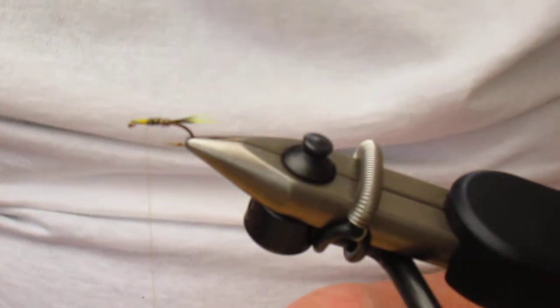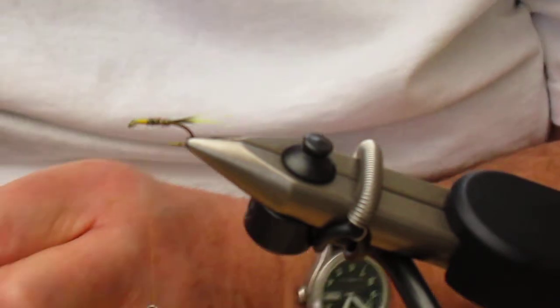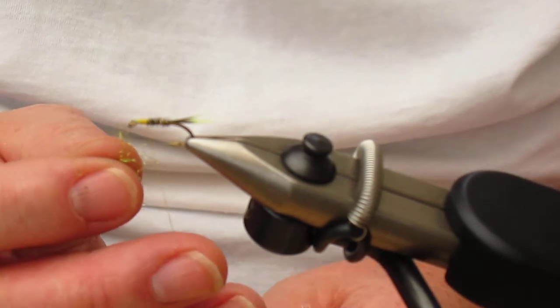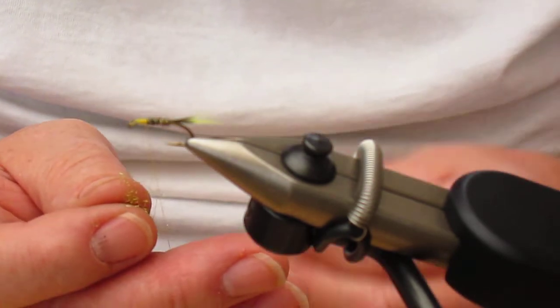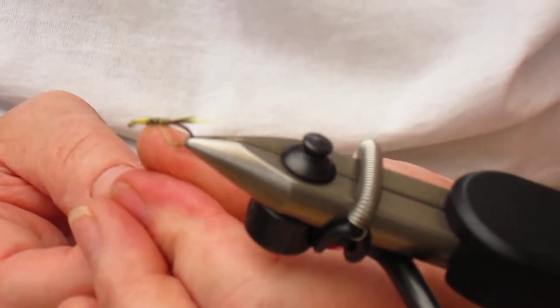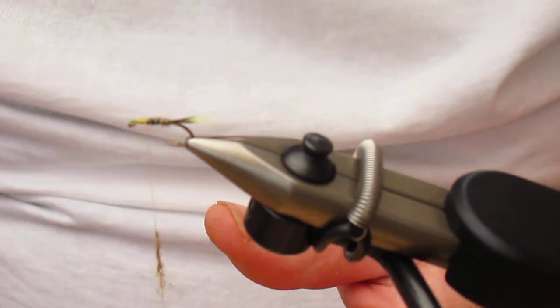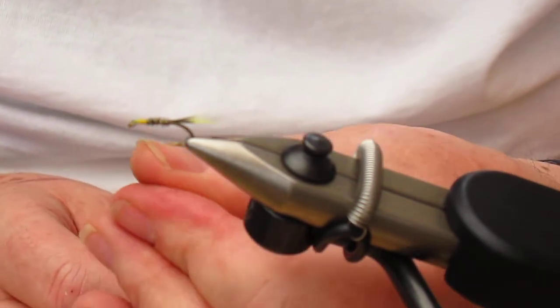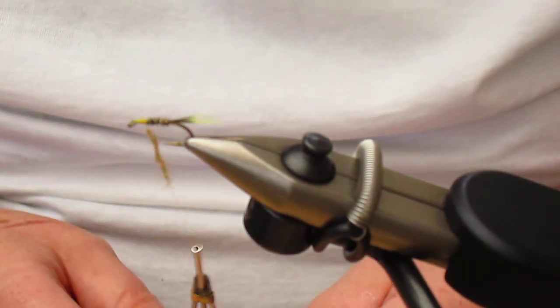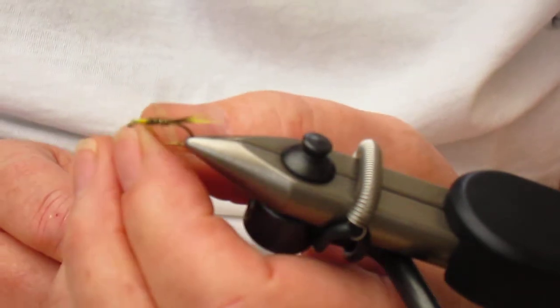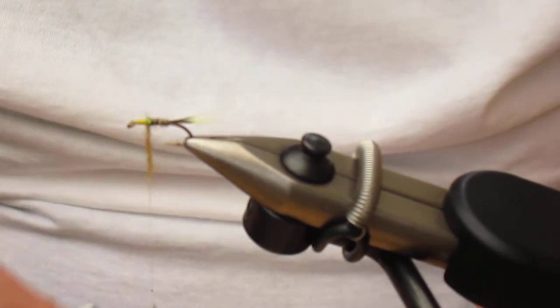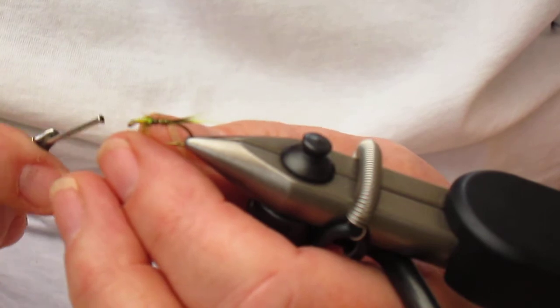That's fine. Now what we want now is a small pinch of a nice material—it's golden olive glister—which we're going to dub onto the thread. Now we want this to be quite straggly. We want it to sort of fan out at slightly different angles so the light actually catches it. So we've dubbed it on. Now we don't want too much of this, but we're just going to take a couple of nice turns.